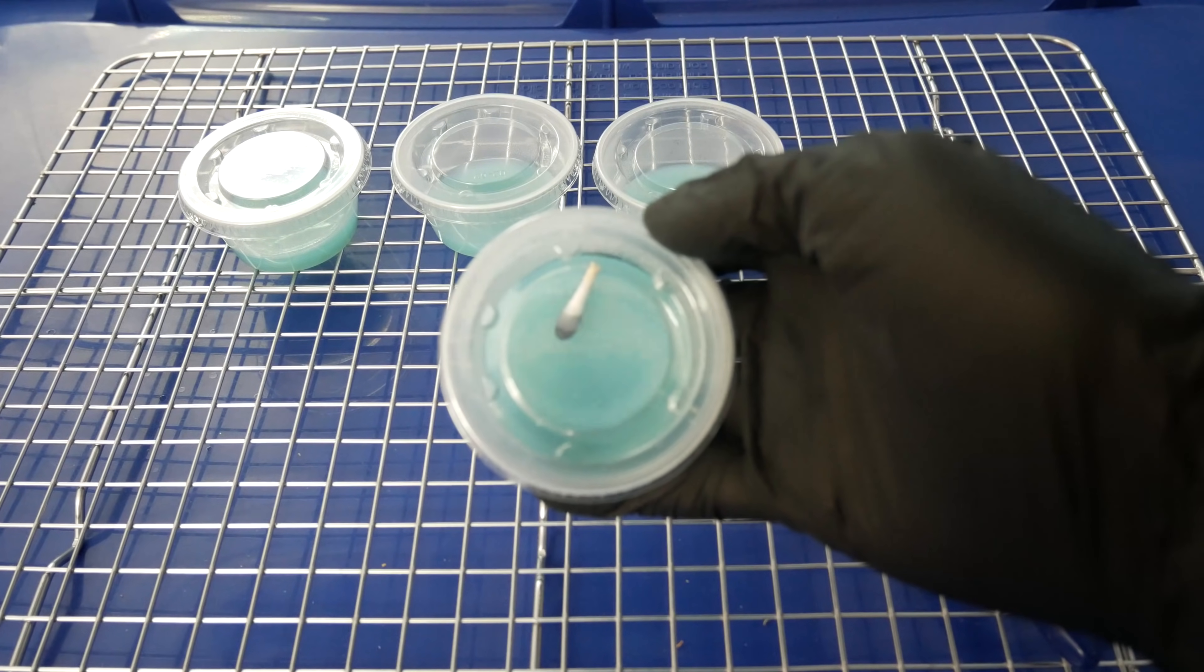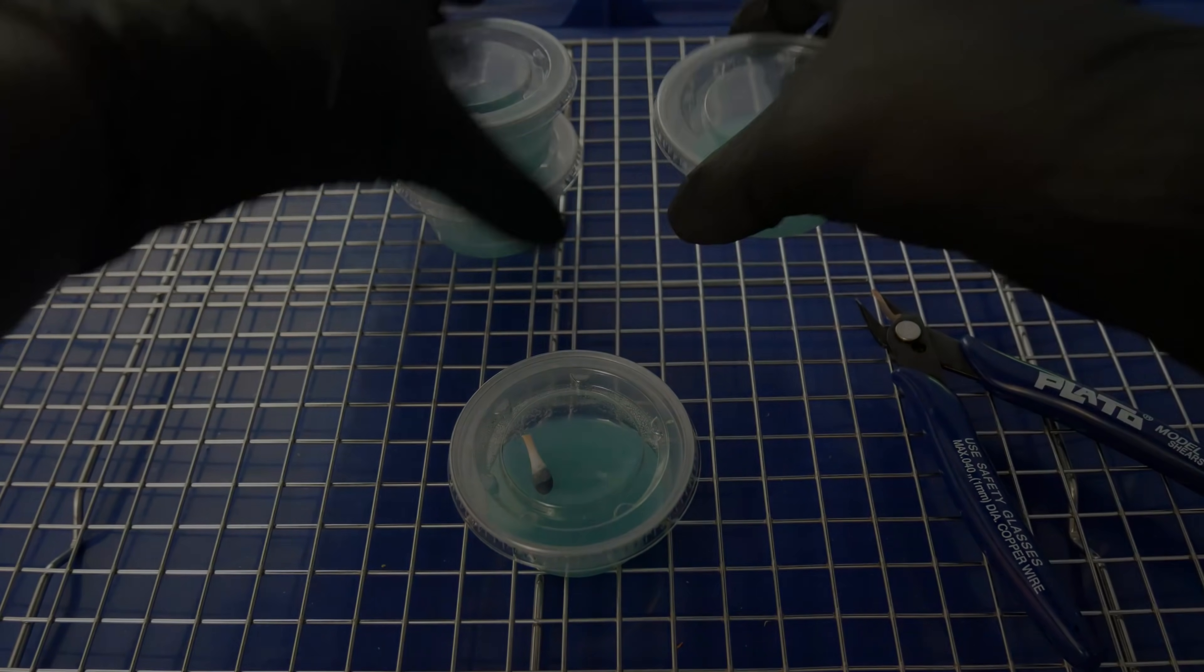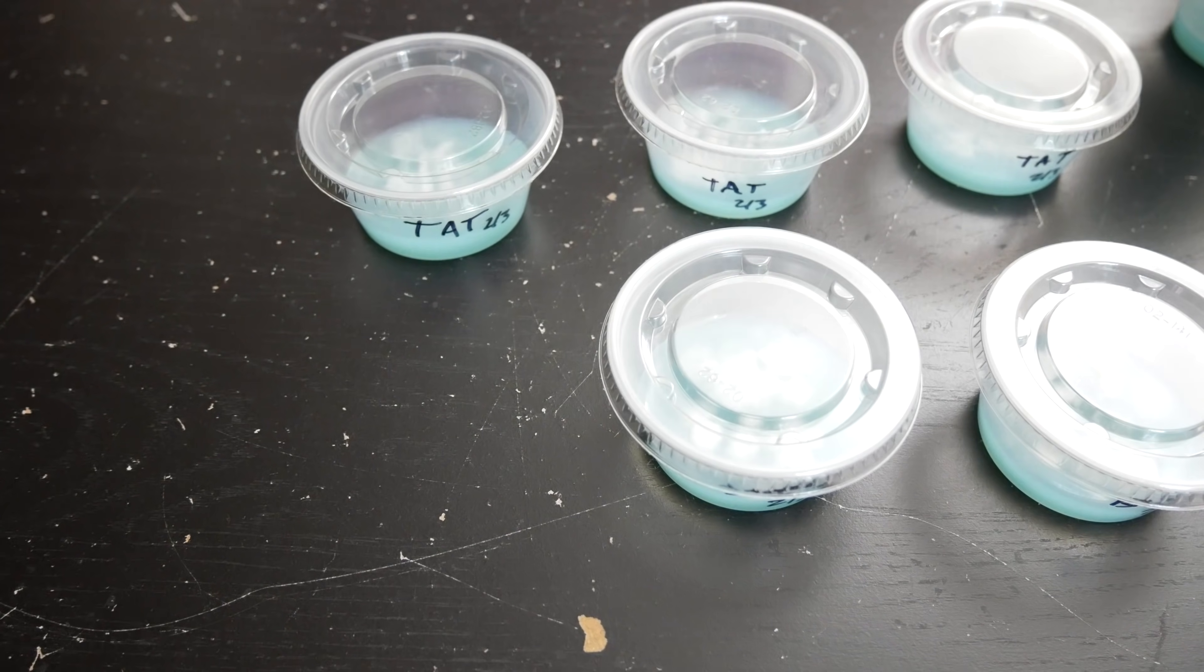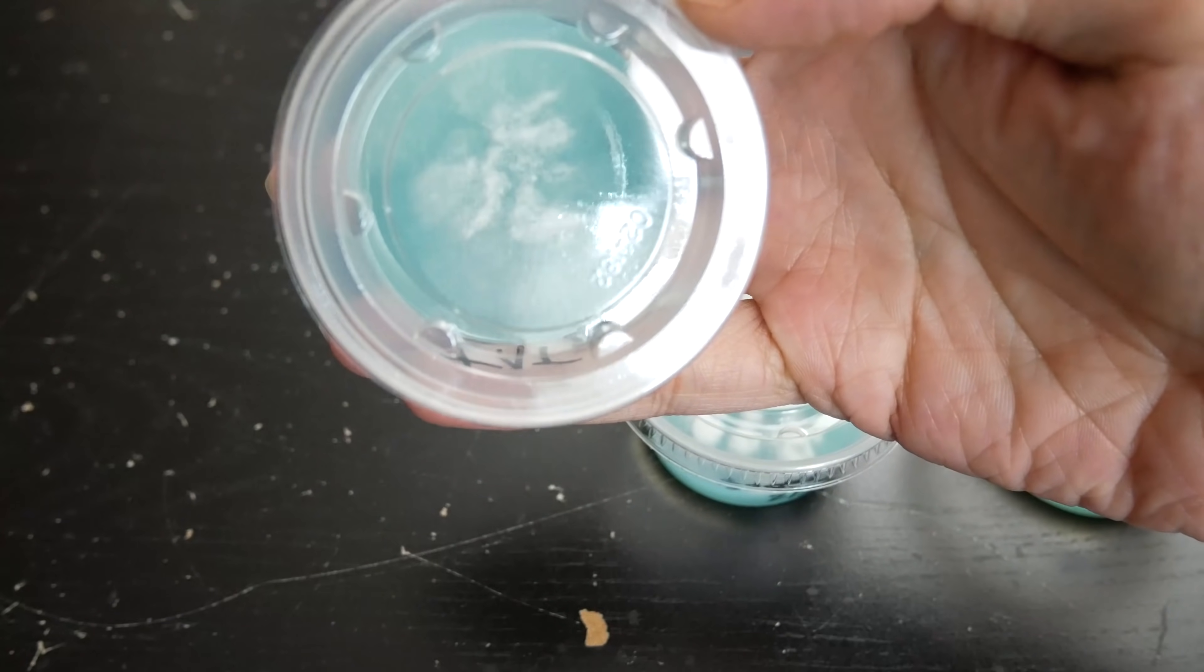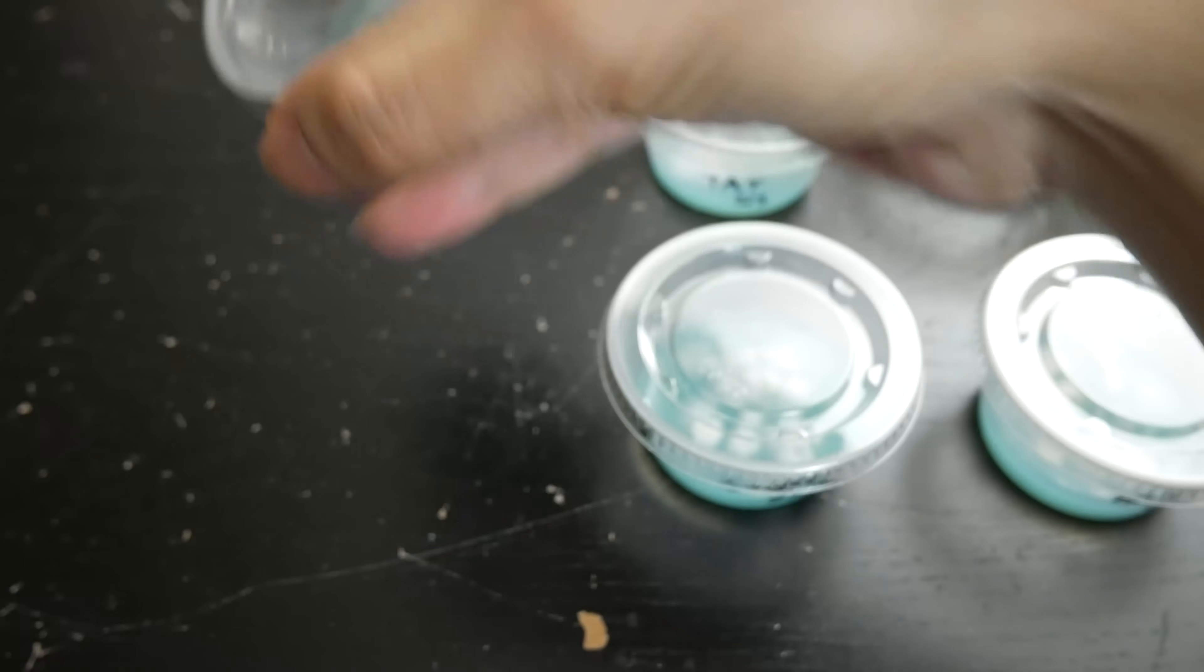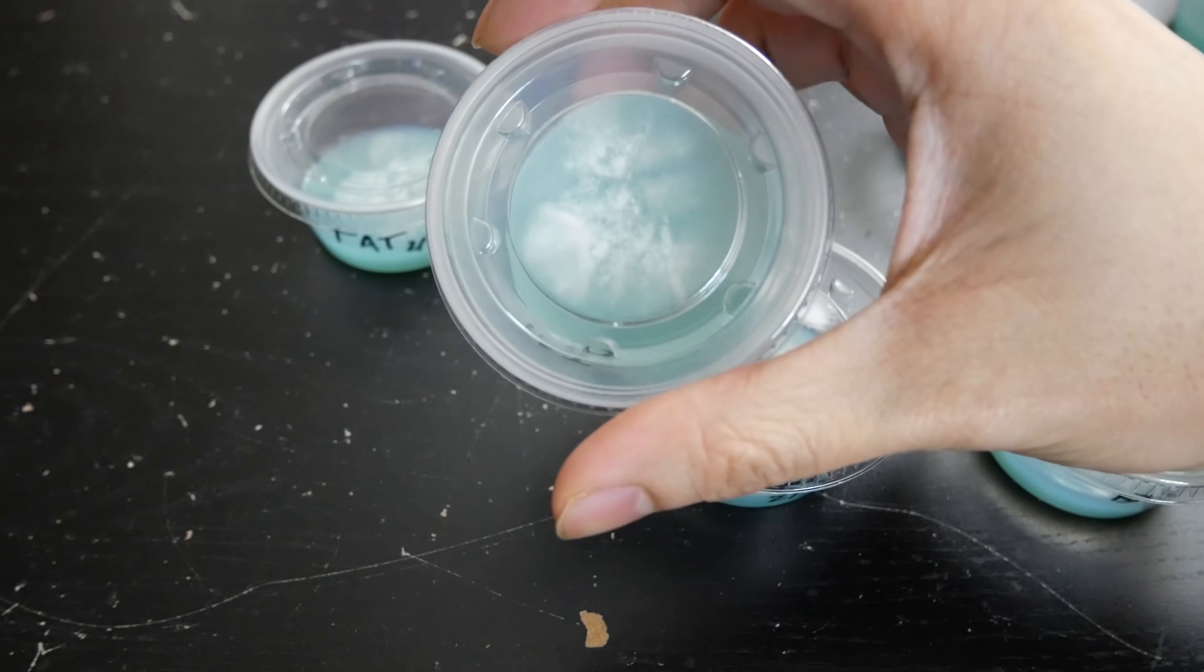One week later. All right, after about seven days here, this is what you might see from your agar dishes. You see little mycelium start to germinate in our cups. What we didn't see there before is now showing up pretty clearly.